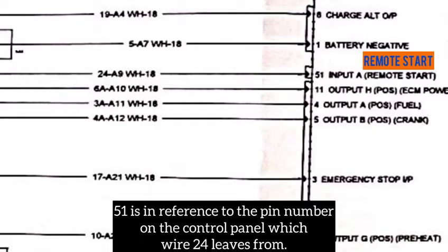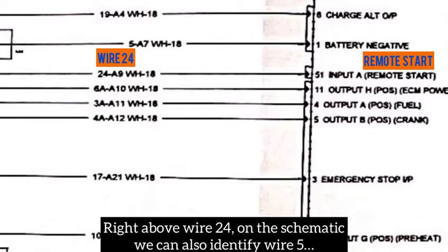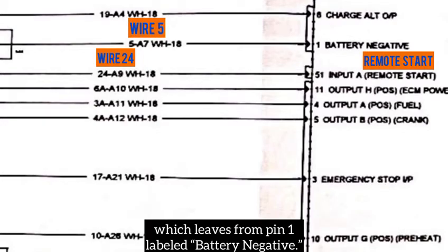51 is in reference to the pin number on the control panel which wire 24 leaves from. Right above wire 24 on the schematic, we can also identify wire 5, which leaves from pin 1, labeled battery negative.